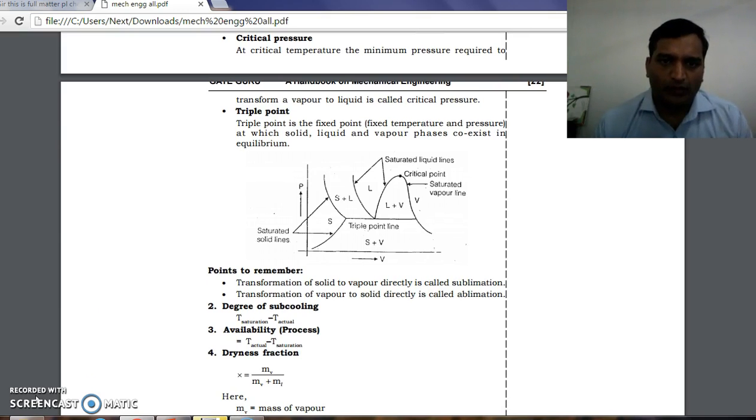Triple point is the fixed temperature and pressure at which solid, liquid, and vapor phases coexist in equilibrium. Here we have to see that all three phases must be in equilibrium.